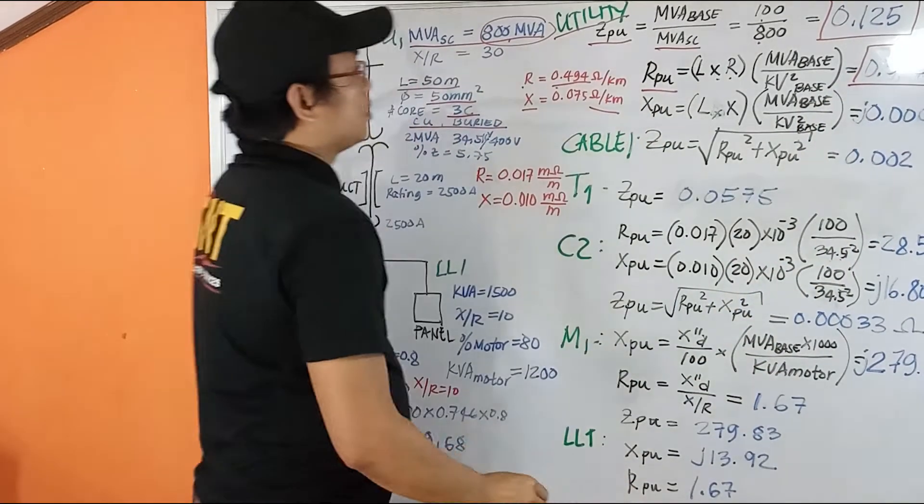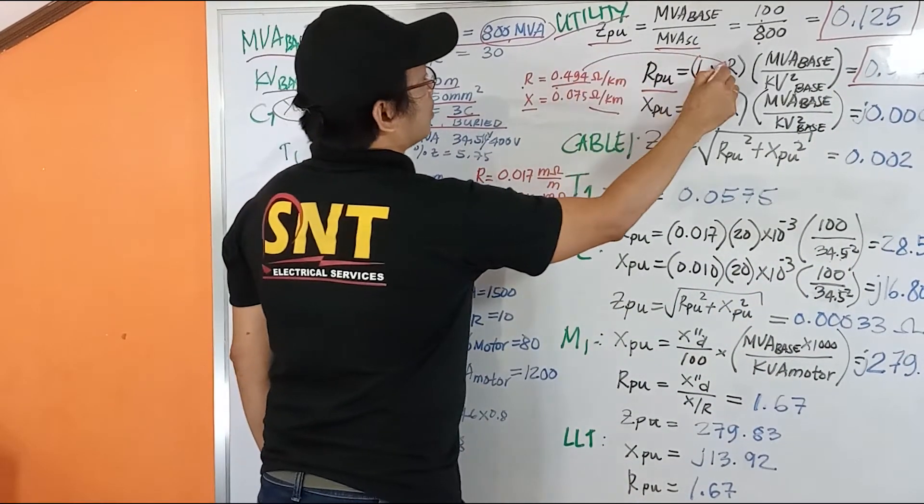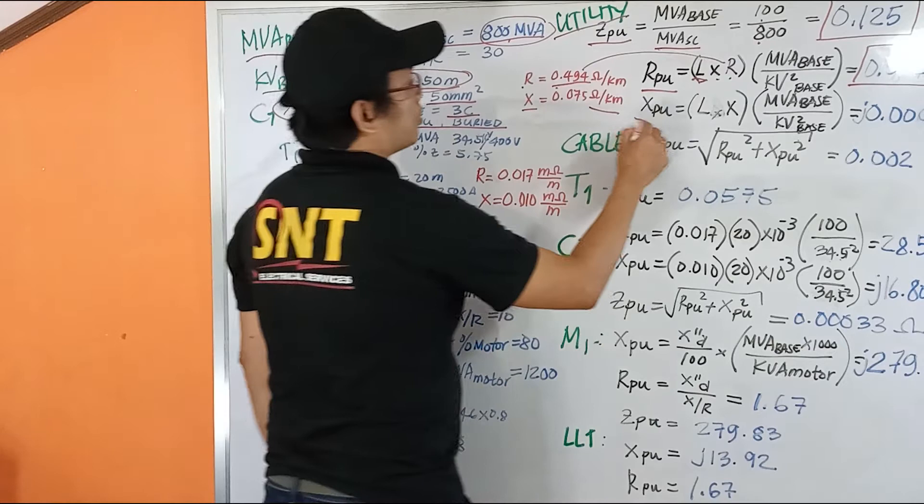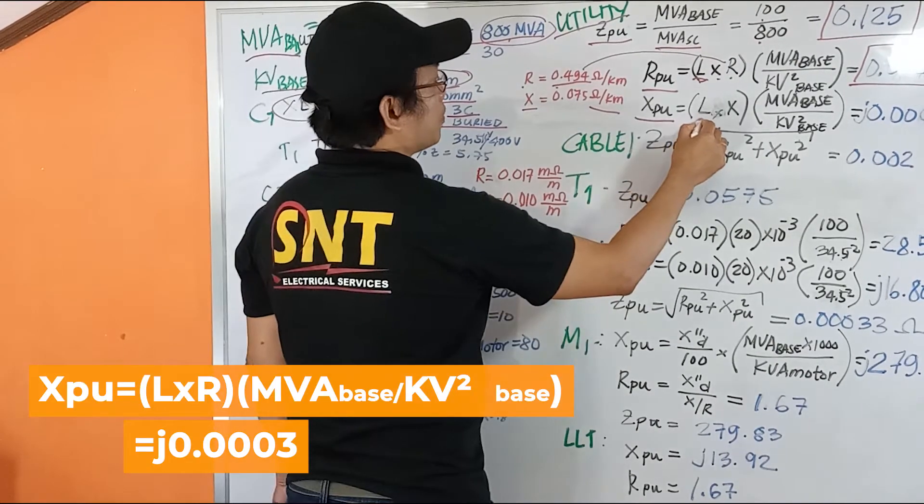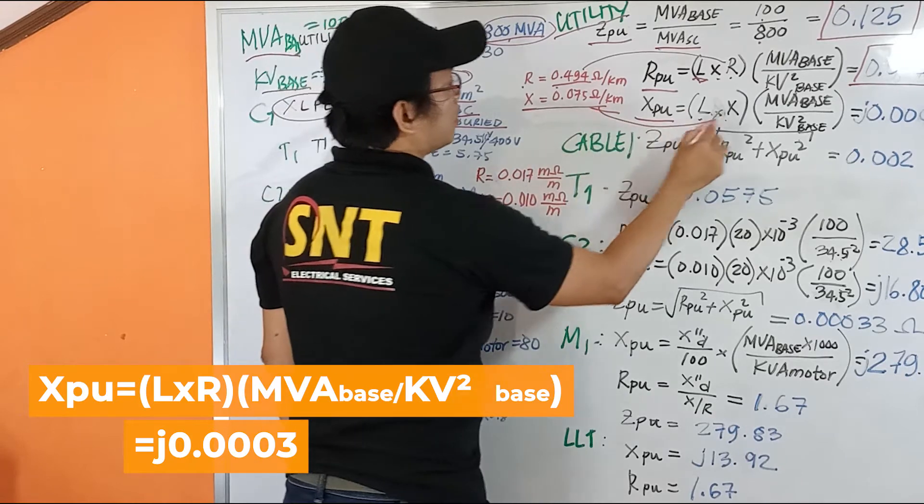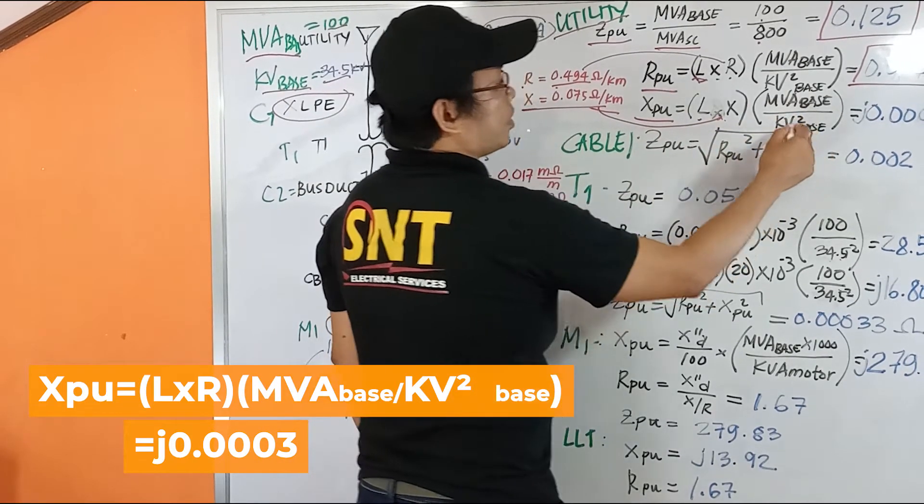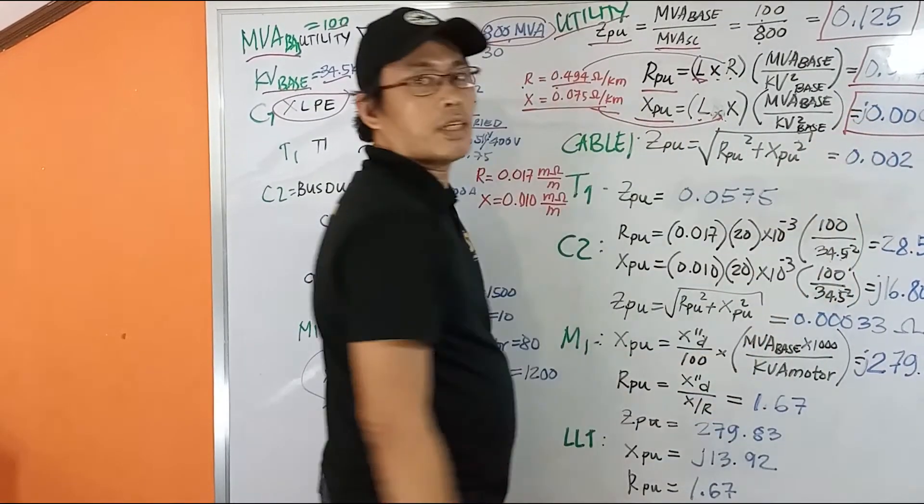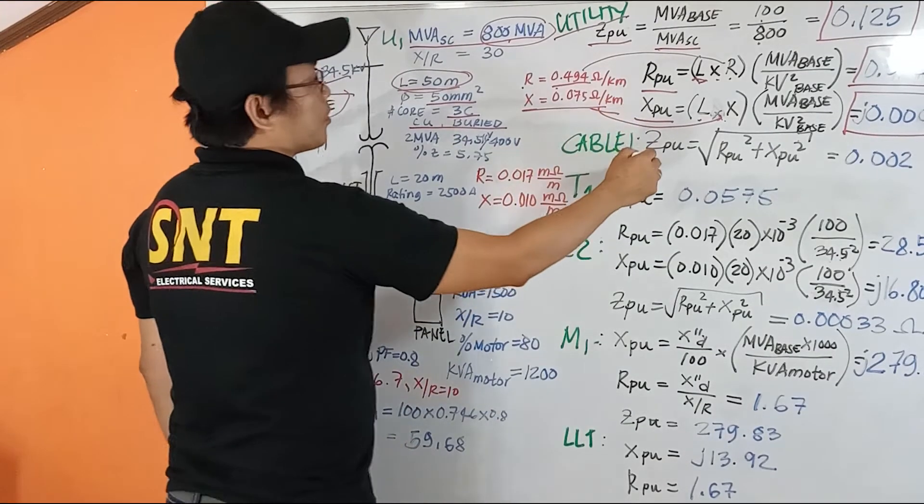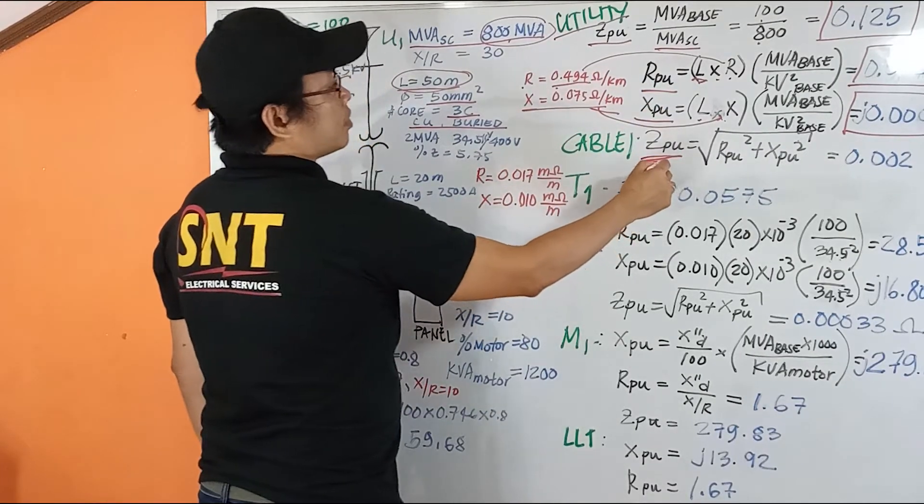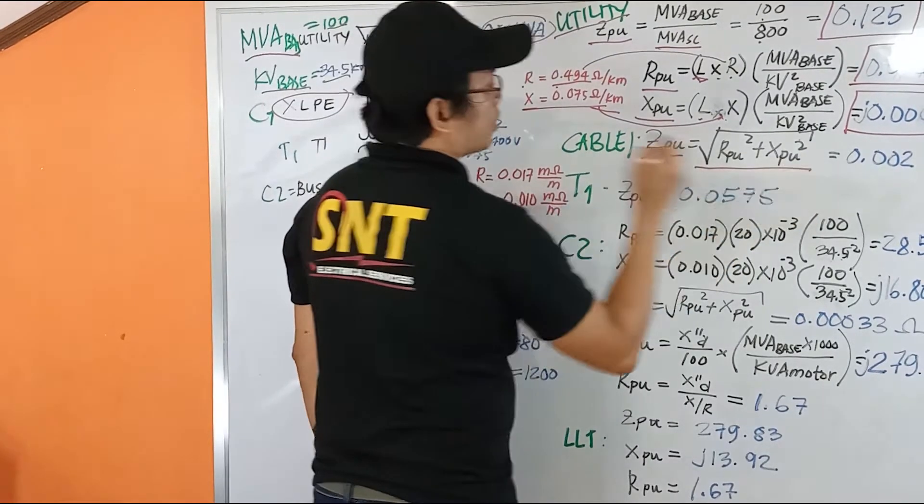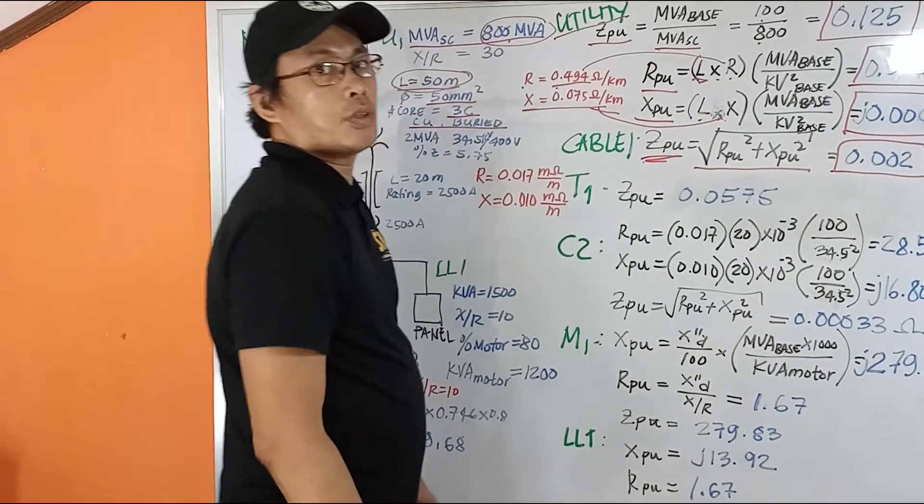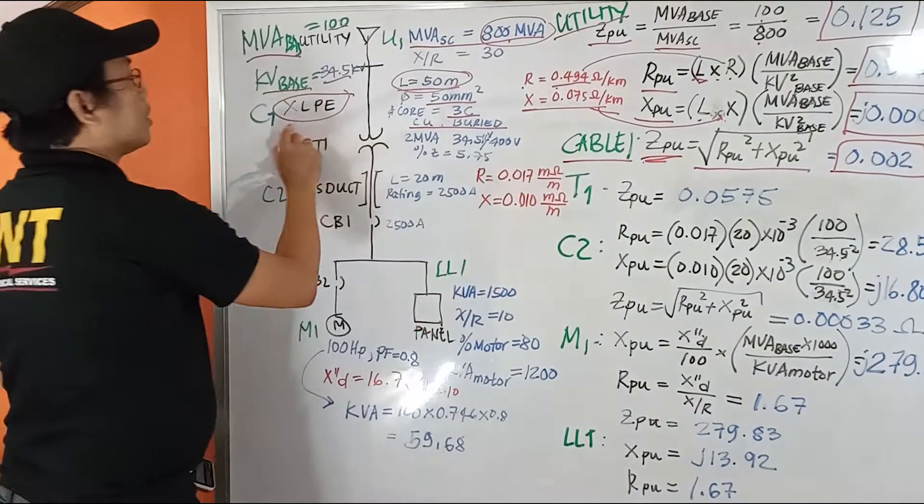So our R here, and our length is 50. In the same manner, our reactance per unit, we have the length 50 times this value here. Then MVA base over the kV base, the voltage squared, and we get this value. 0.002. That's for our cable number one here, the XLPE.